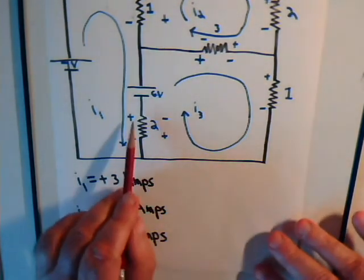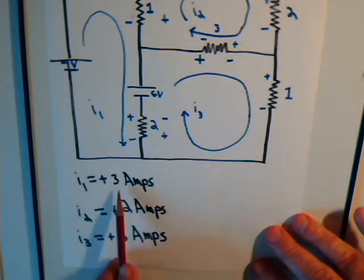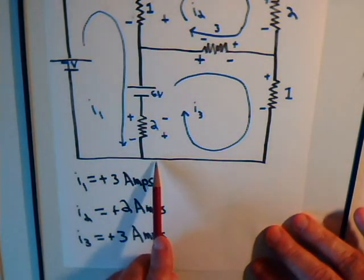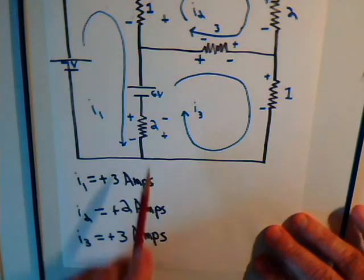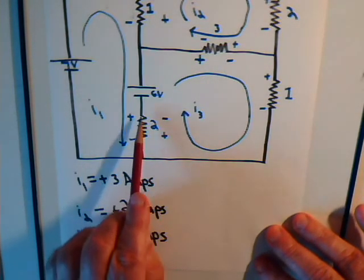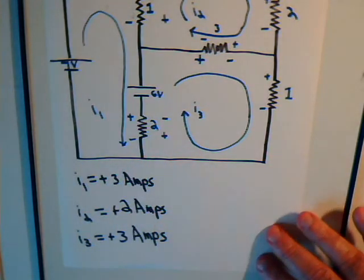And for this resistor, here we have I1 at 3 amps, here we have I3 at 3 amps. Take the difference between them, and there is no current at all in this resistor.